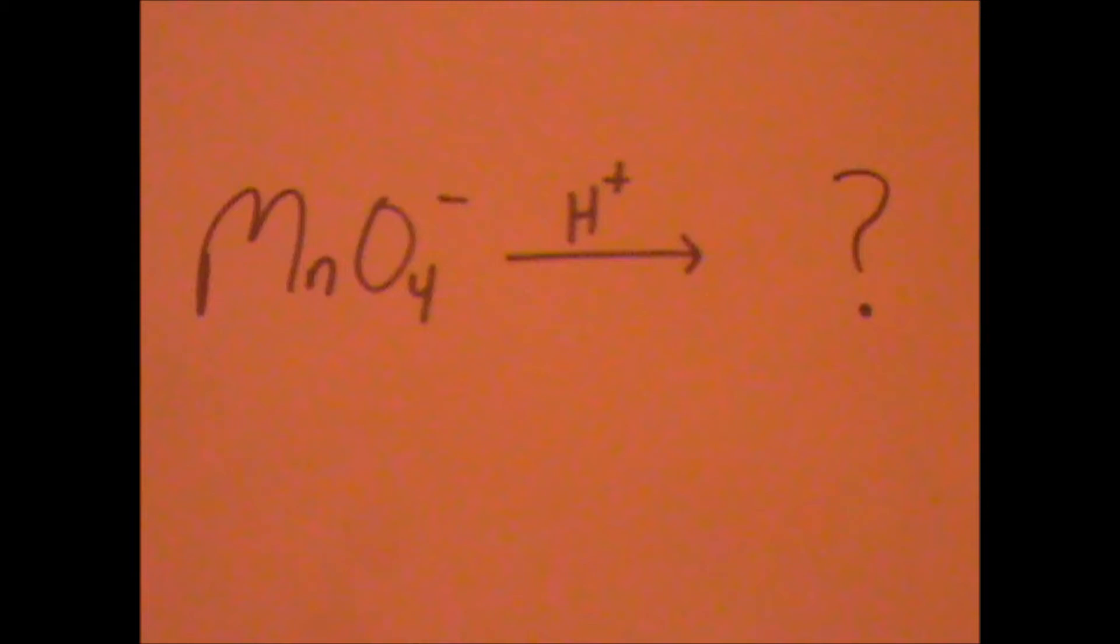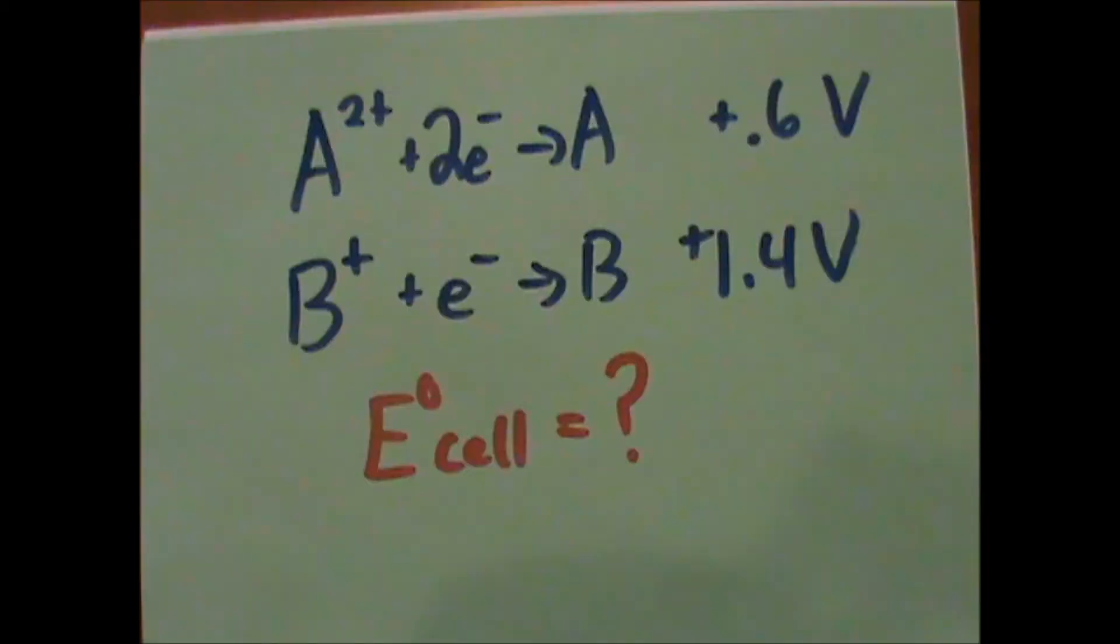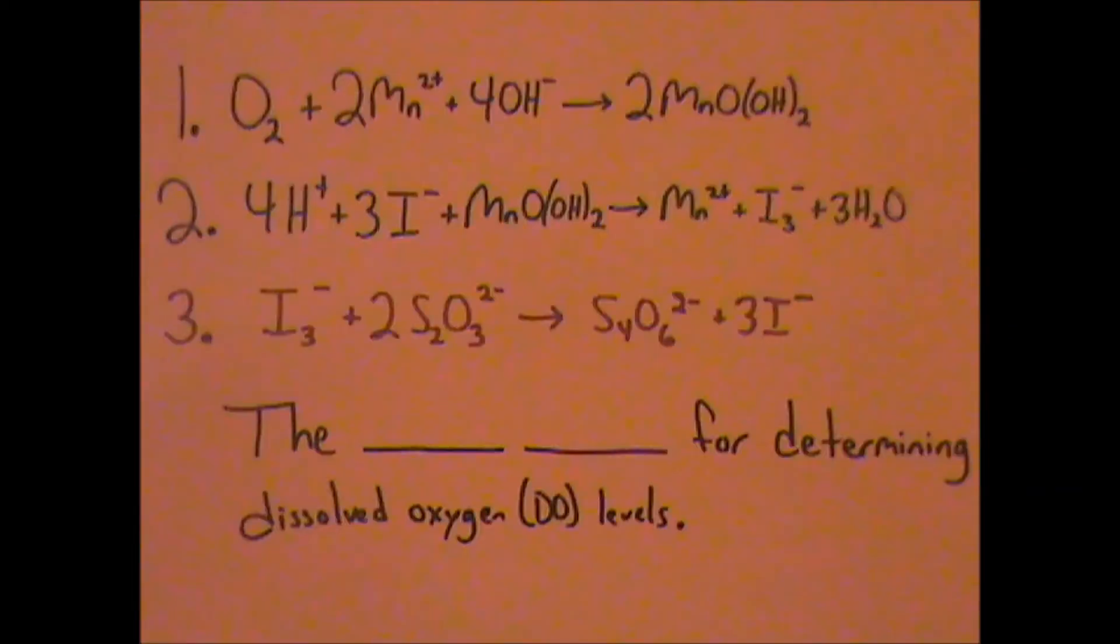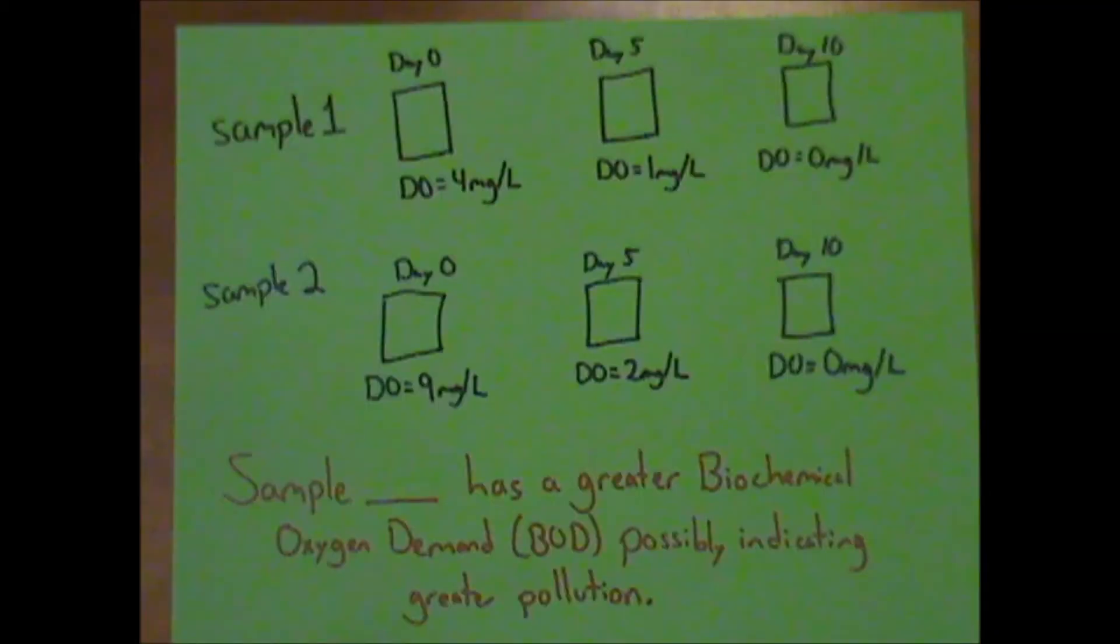Mn2+, 0.8 volts. An amp is a coulomb per second. The Winkler method. Sample 2.